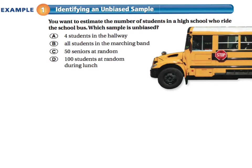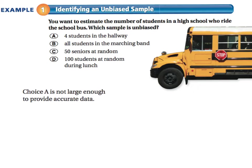Choice A says four students in a hallway. Choice B says all students in a marching band. Choice A is not large enough — you need a pretty good-sized representative of a population. It's biased because it's not large enough.